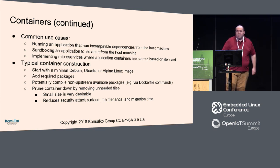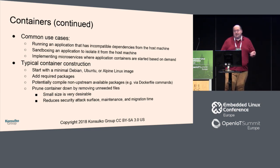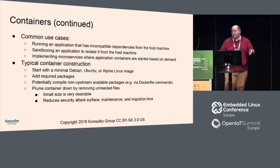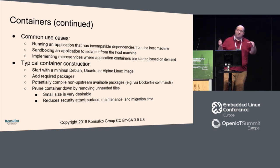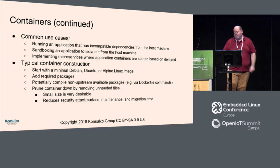Typical container construction these days starts with a minimal system — Debian, Ubuntu, or very commonly Alpine Linux, which is quite small — then you add required packages for your application. You might compile things, install a toolchain, build software, then prune the toolchain and source to make a very small image. This is desirable because it reduces the attack surface, is easier to maintain, and speeds up container migration in cloud scenarios.